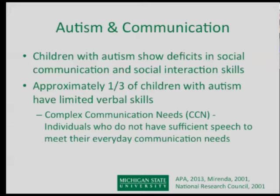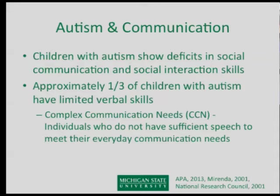Approximately a third of children with autism also have limited verbal skills. This is the group I'm most interested in, because communication is a way for them to access the world and show competence. If people presume they aren't competent, that limits what they're able to do academically. This group with limited verbal skills is referred to in the literature as having complex communication needs, or CCN — meaning they don't have sufficient speech to meet their everyday needs.